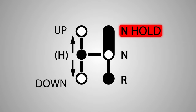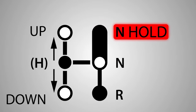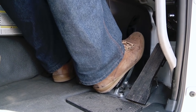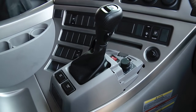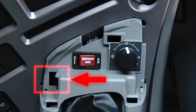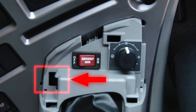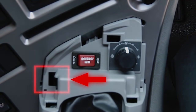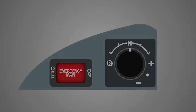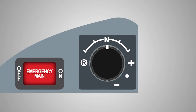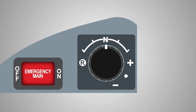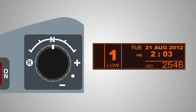In an emergency, when the gear shift lever cannot be released from the neutral hold position when the service brakes are applied, remove the front cover of the shift tower and push the neutral hold unlock button to manually unlock the neutral hold position. The emergency gear shift switch can be used to select neutral, as well as first low, second low, third low, or reverse low.